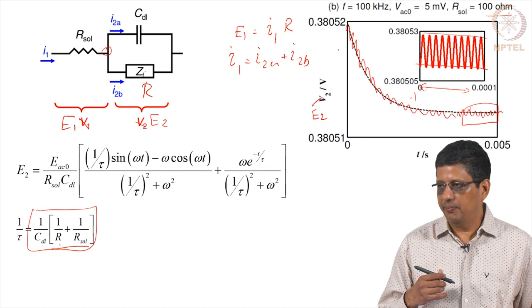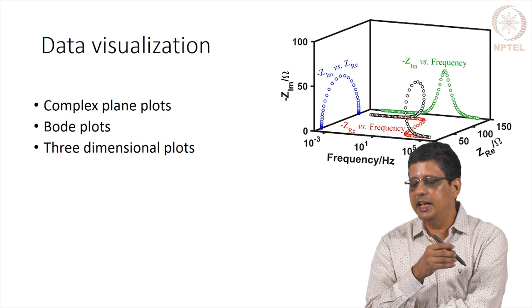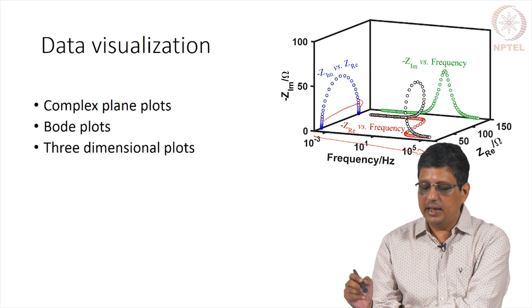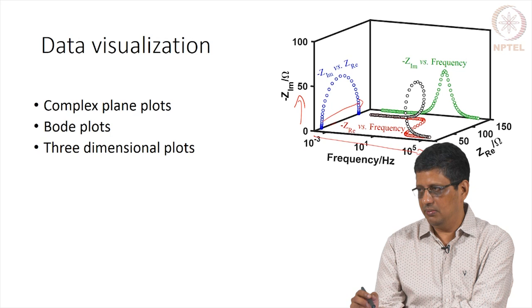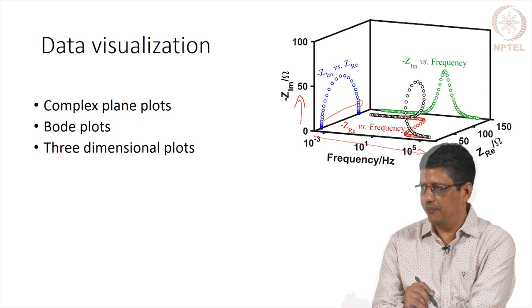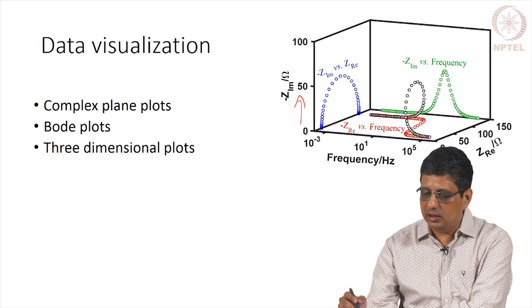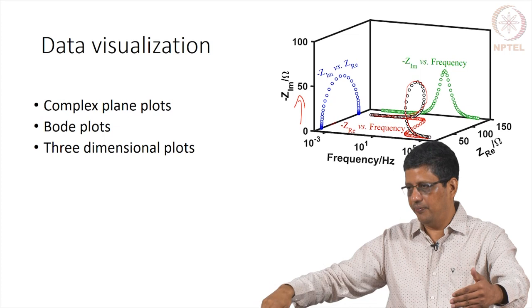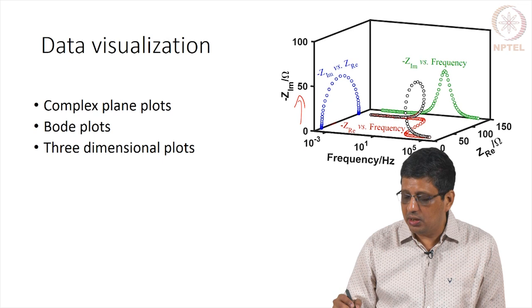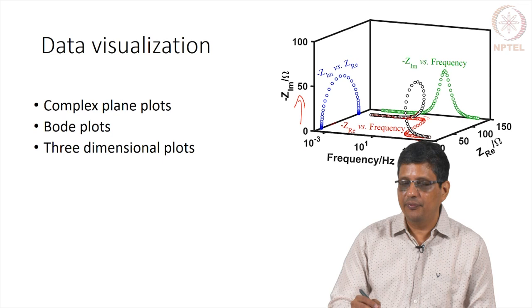Another way to visualize this data is a 3D plot, where frequency is on the x-axis, Z_real is on the y-axis, and minus Z_imaginary is on the z-axis. The scale must be adjusted so it looks approximately equal. If you are able to plot it this way, you can see the data goes like a loop — it comes out as a loop and comes around. Visualizing it, the data starts at a far away point, comes towards us, and then settles. You can also see one Bode component as minus Z_imaginary, the other as Z_real versus frequency, and the complex plane plot all in one view.